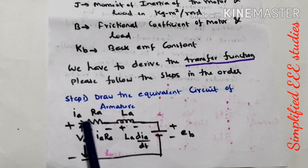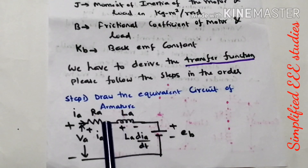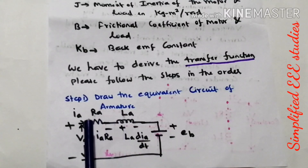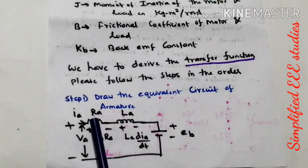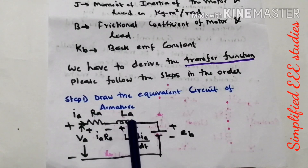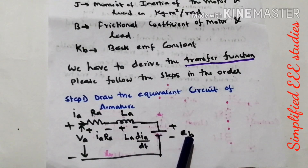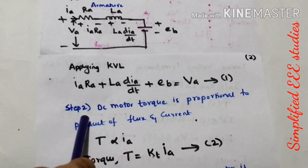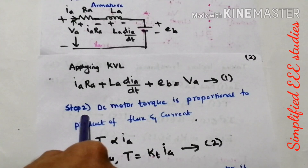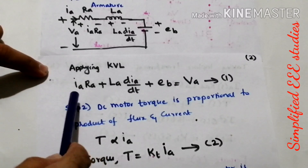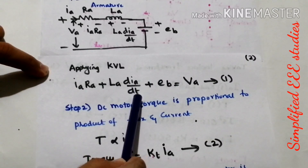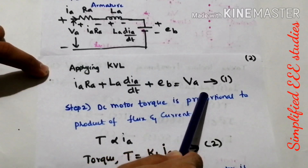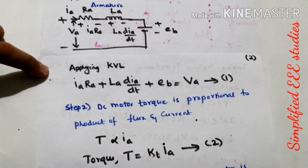First and foremost, you need to draw the equivalent circuit of the armature. As you can see, this is the equivalent circuit of armature. You have to represent armature resistance Ra, then armature inductance La, the back EMF, and the supply voltage Va. Now you have to apply KVL. By looking at the diagram, you can directly apply KVL, and you will get: Ia·Ra + La·(dIa/dt) + Eb = Va. Please call this equation number 2.